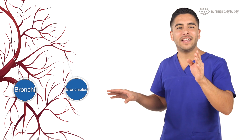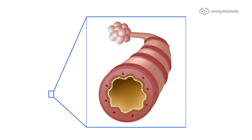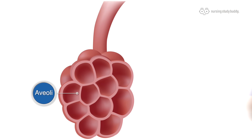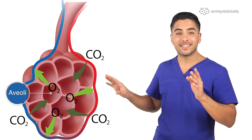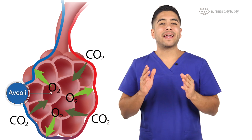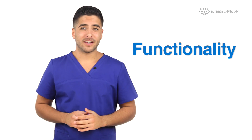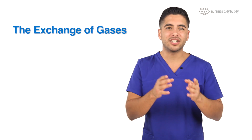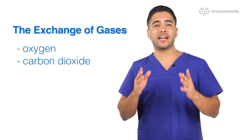At the end of each bronchiole we have sac-like formations called alveoli. These can be imagined as flowers or seeds, and they are responsible for gas exchange. Gas exchange basically is just like it sounds — the exchange of gases, namely oxygen and carbon dioxide.